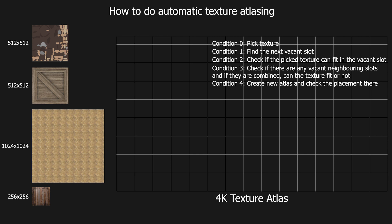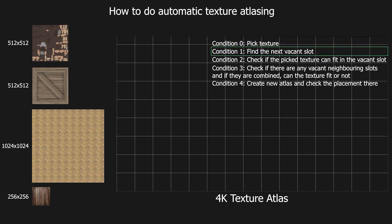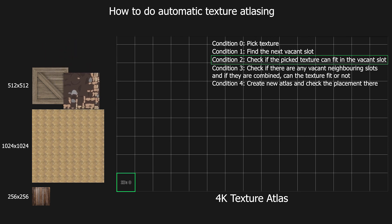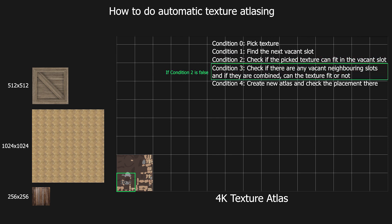Let's proceed with placement of these textures. We'll pick the first texture and search for the next vacant slot. We get slot with ID 0 as the next vacant slot since all slots are currently vacant. Checking if the texture can fit in this slot — it will not, so condition 2 does not satisfy. We then check for vacant neighboring slots. The immediate neighboring slots with IDs 2, 15, and 16 are vacant, and after combining those, the picked texture can fit in the combined area.